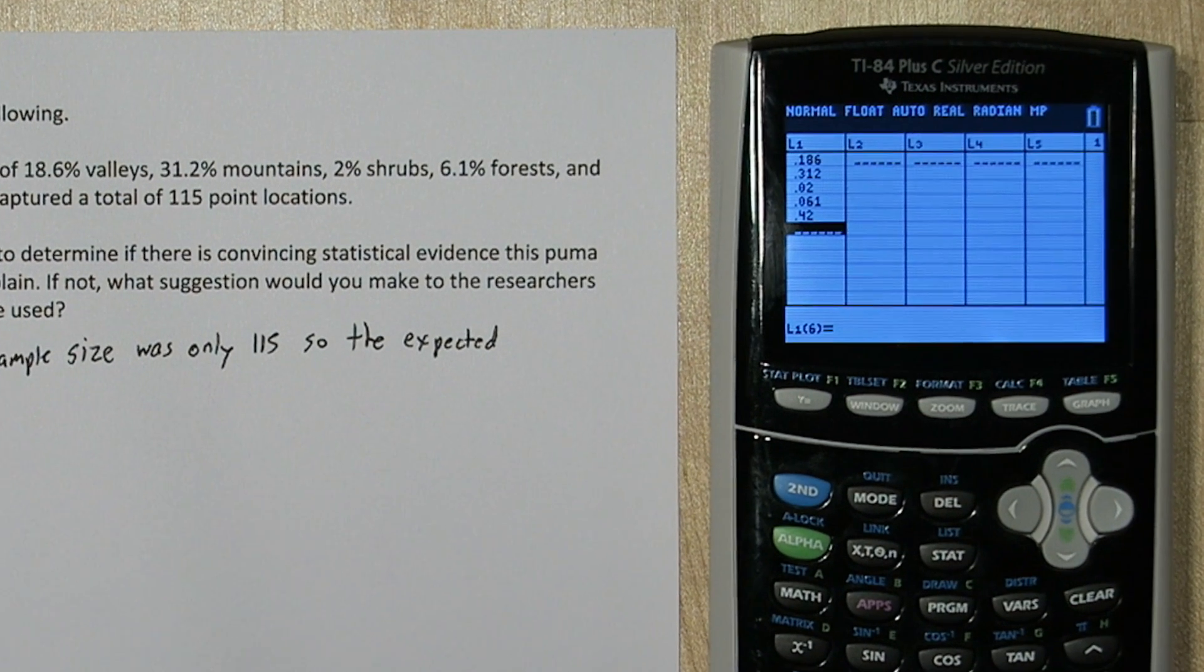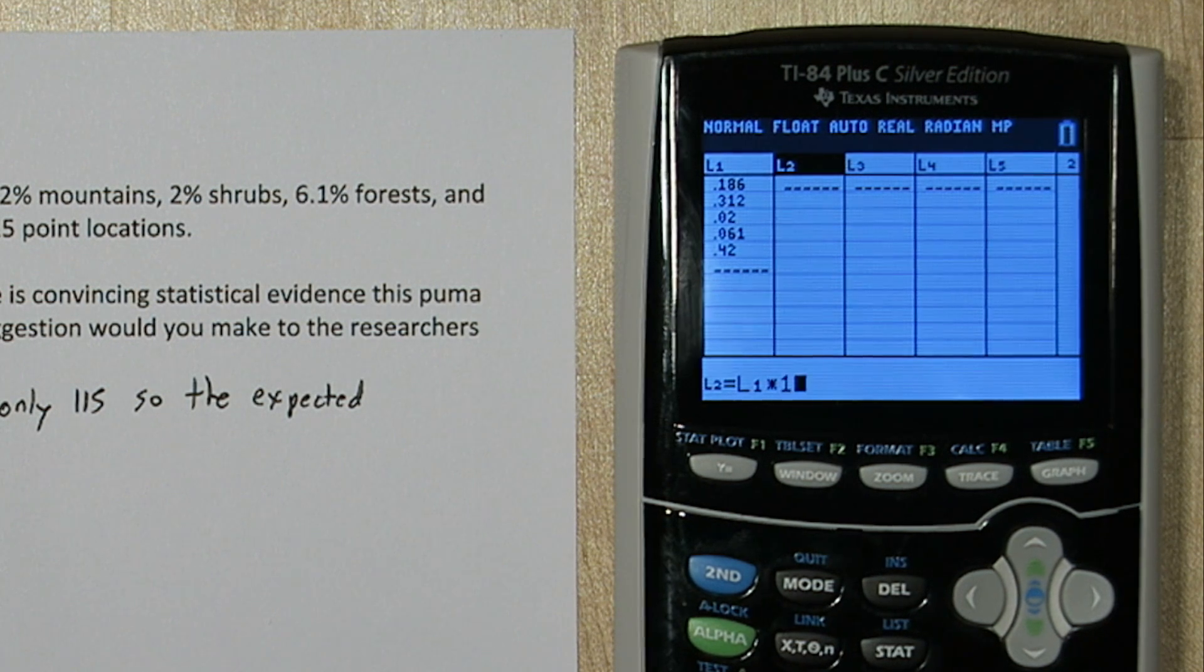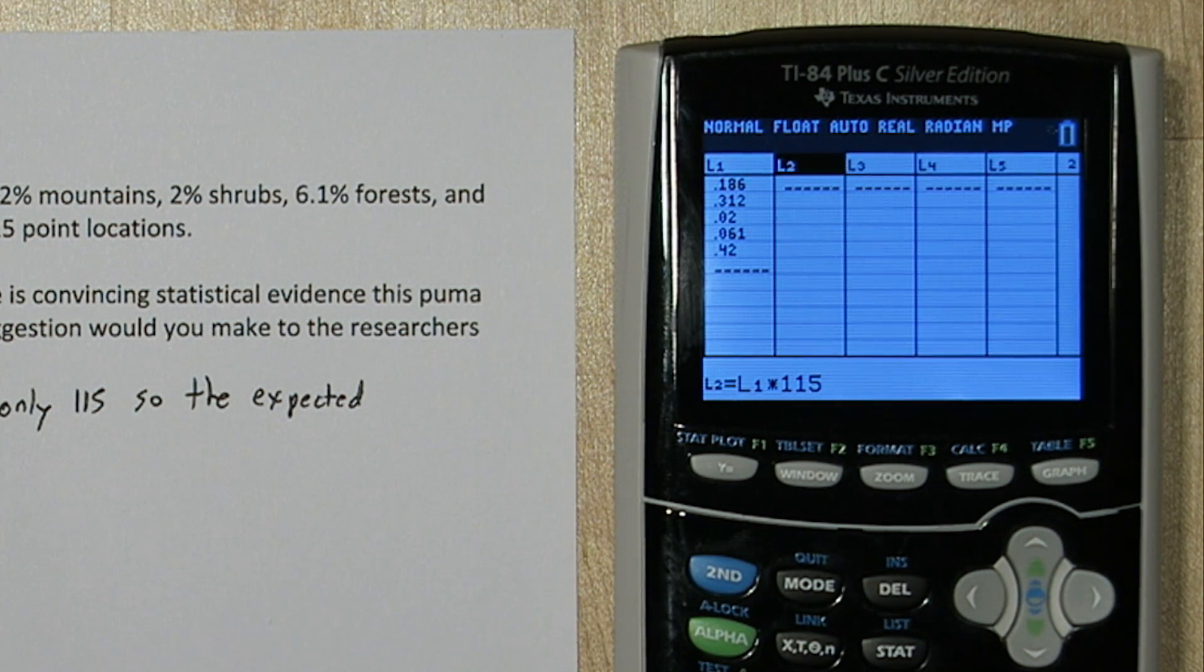Now to calculate our expected cell counts, we're going to press OVER and then UP so LIST 2 is highlighted. This is our function bar, and we're going to say SECOND 1, which accesses LIST 1. We're going to multiply that by 115, our sample size.